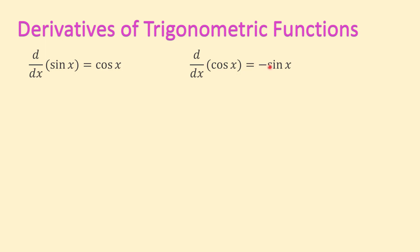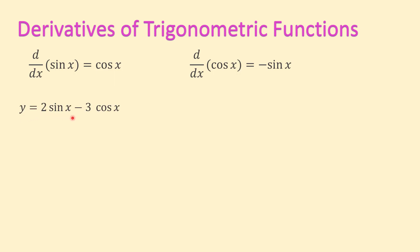Because learning derivatives of all trigonometric functions at once is confusing, let's try some examples with these formulas, and later we'll talk about derivatives of other trigonometric functions. For example: y equals two sine of x minus three cosine of x.